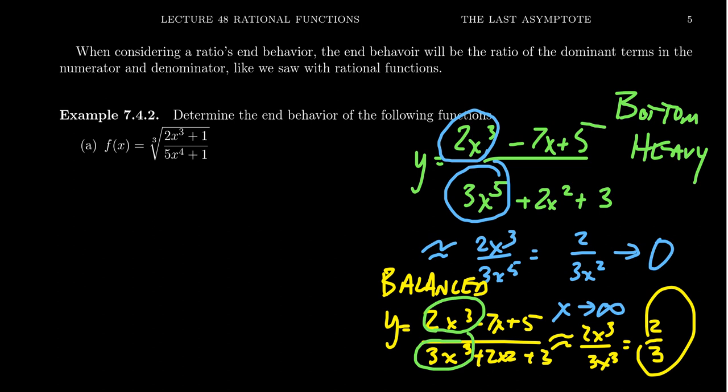In more general ratios, we still look for dominance. But we have to be careful because dominance can change hands — you can pass the baton as you go from negative infinity to infinity. For rational functions, whoever was dominant as you went towards infinity is the same as you approach negative infinity, because of how power functions work. But it can get more subtle. Let's look at this example: f of x equals the cube root of 2x cubed plus 1 over 5x to the 4th plus 1. We'll determine the end behavior by looking for the dominant terms.